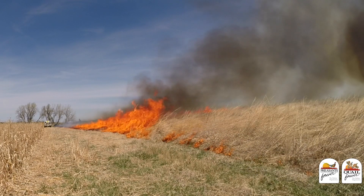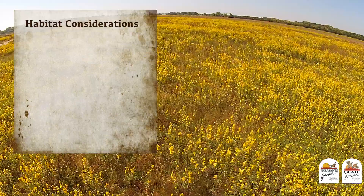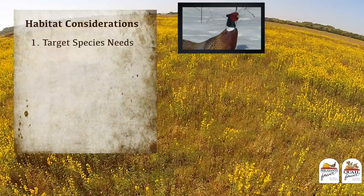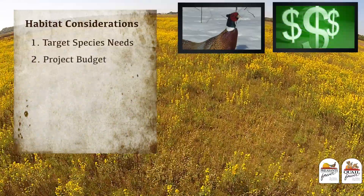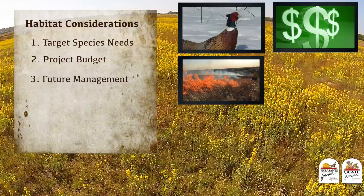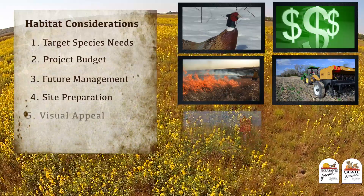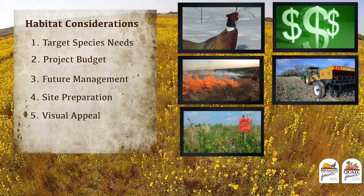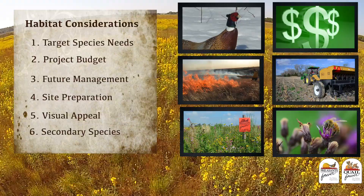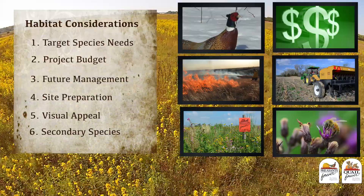When designing a project, I suggest you consider six factors: one, what's your target species and what are their specific habitat needs; two, what is going to be the cost of the project and what your budget is; three, what future management activities are you planning to apply; four, what kind of site preparation is needed; five, visual appeal — do you want the project to look flowery and showy; and six, what are the secondary species you can benefit, like the squash bee and our pumpkins.